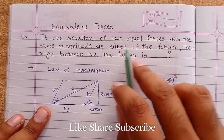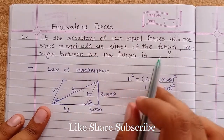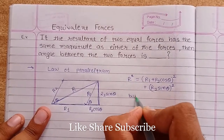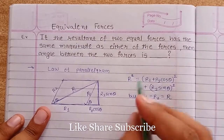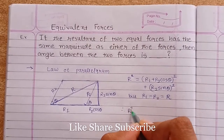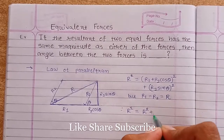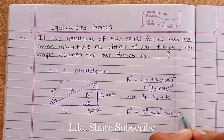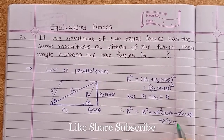In our problem, the two forces are equal, so R1 = R2, and the resultant also has the same magnitude. Let R1 = R2 = R. Substituting into the equation: R squared equals (R + R cos theta) squared plus (R sin theta) squared, which expands to R squared plus 2R squared cos theta plus R squared cos squared theta plus R squared sin squared theta.